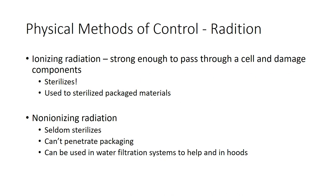What about radiation? There are two different types. Ionizing radiation is strong enough to pass through a cell and damage its components, allowing it to sterilize. Ionizing radiation includes things like x-rays and gamma radiation, and we use this to sterilize a lot of medical equipment packaged in plastic. Non-ionizing radiation includes things like ultraviolet light, which doesn't sterilize very well because it can't penetrate through anything. We often use non-ionizing radiation in water filtration systems as a backup filter, and in hospital settings certain hoods and equipment are hit with ultraviolet light to kill some microbes.